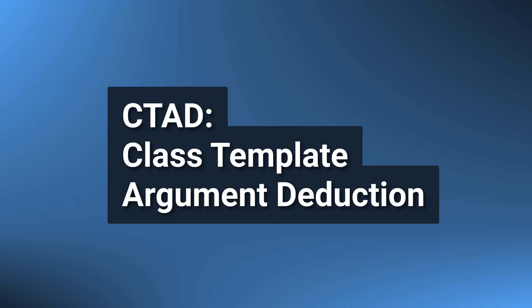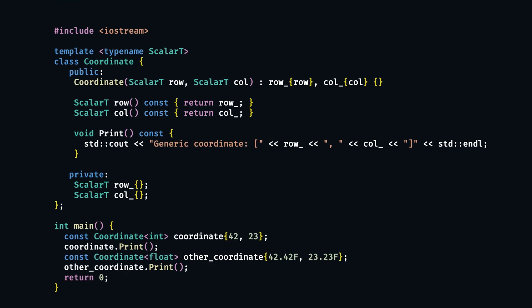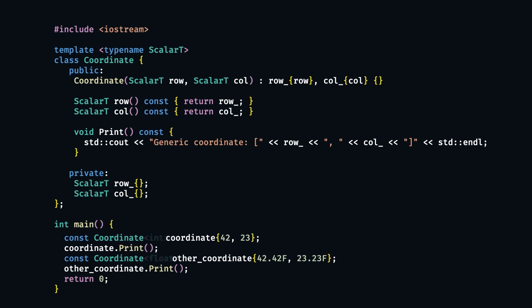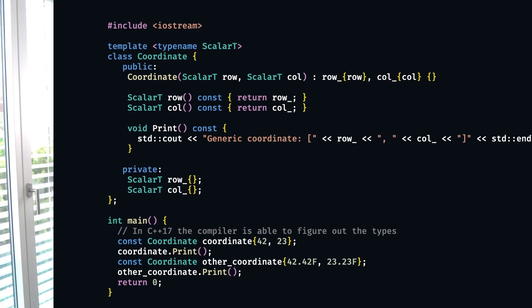If our class has a constructor that uses all of our template types, and we are using at least C++17, we can make use of class template argument deduction, or CTAD, and omit the template arguments when creating our objects. This process uses implicit and explicit type deduction guides, which is a bit of a niche topic and I don't plan to actively cover it in this course. But if we have a constructor for our class, we don't have to worry about it, and the compiler will mostly be able to figure out the underlying types that we meant.